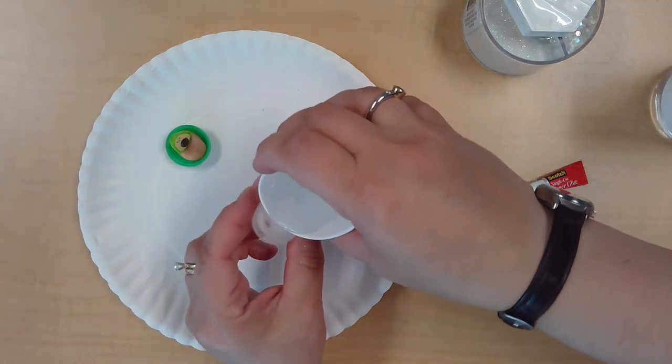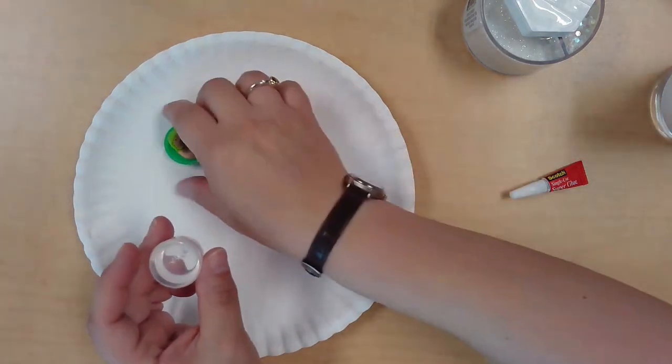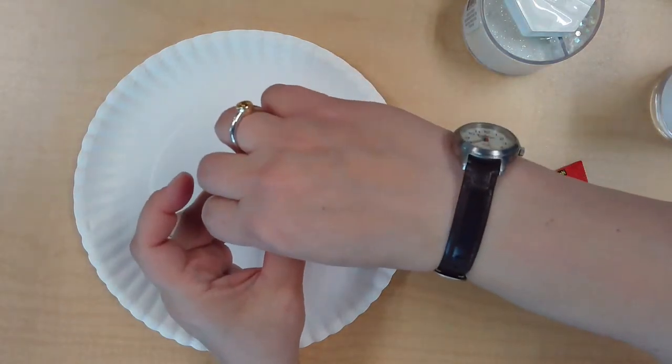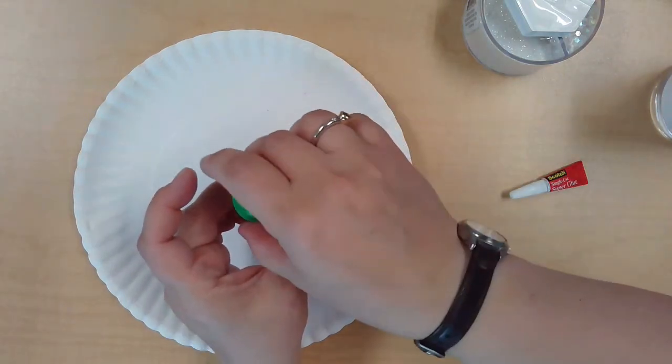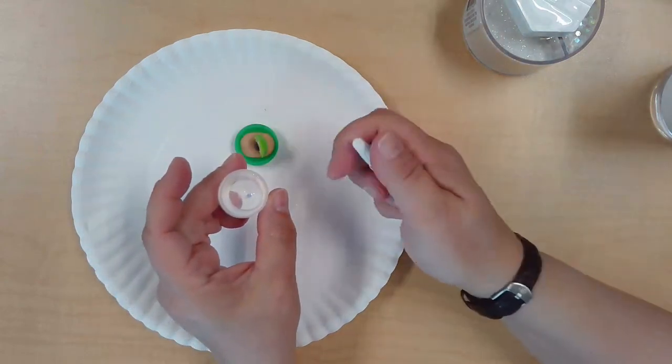Then you're going to add some water - not all the way to the top, because you want to allow space for your slime charm. You can check it to make sure it doesn't overflow. You may need to add more water or take some out.